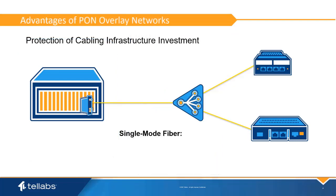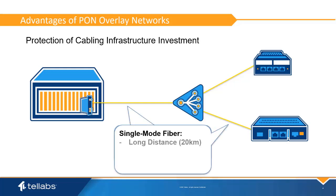PON overlay networks have several advantages. First, it protects the cabling infrastructure investment. PON technology is implemented around a single-mode fiber cabling plant. Single-mode fiber works well over long distances, up to 20 km or more depending upon the installed laser. Also, single-mode fiber supports very high speeds. Multi-terabit throughputs have been demonstrated on a single-mode fiber.